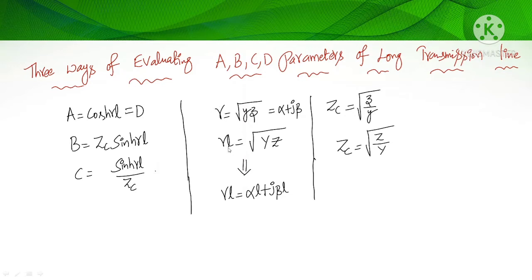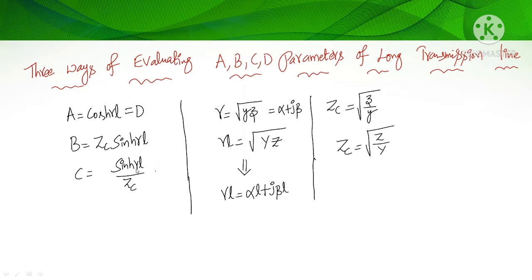If you multiply gamma by l, you can write gamma·l as the square root of YZ, where Y is the total admittance and Z is the total impedance. The characteristic impedance Zc is given by the square root of z/y (per unit length), or equivalently the square root of Z/Y (total). These are the key parameters — characteristic impedance Zc, propagation constant gamma, and ABCD parameters for a long transmission line.